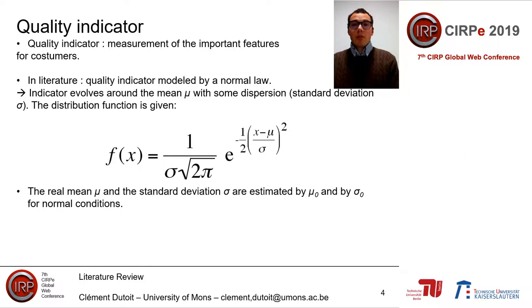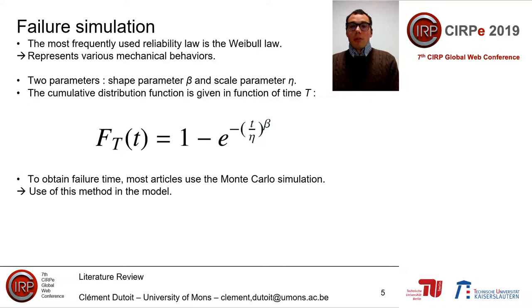The first step in the literature review is to identify the quality indicator, which represents the most important features for the customer. In the literature, the quality indicator is often modeled by a normal law, whose distribution function is given in slide four, with the real mean mu and real standard deviation estimated under normal conditions. For failure simulation, the most frequently used reliability law is the Weibull law, which can represent various mechanical behaviors, with two parameters: beta and eta. The cumulative distribution function is given in slide five, and to obtain the failure time we use a Monte Carlo simulation.